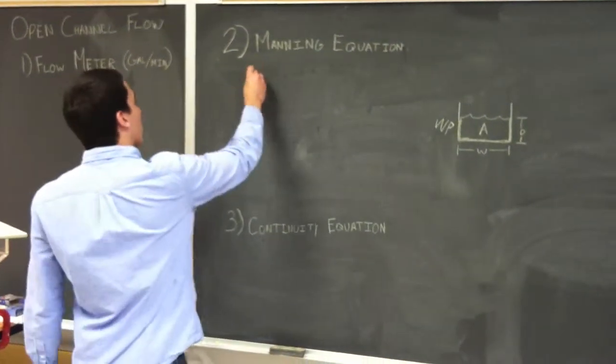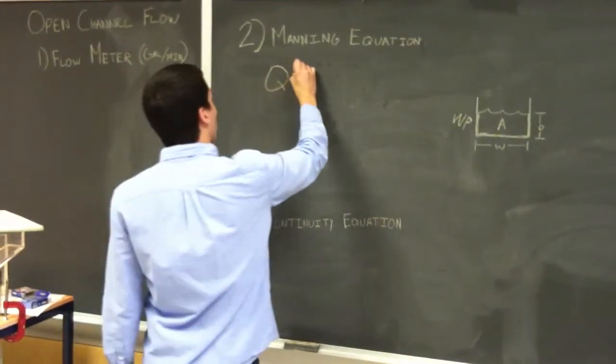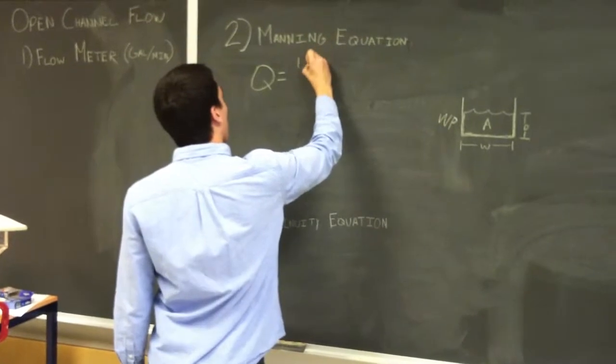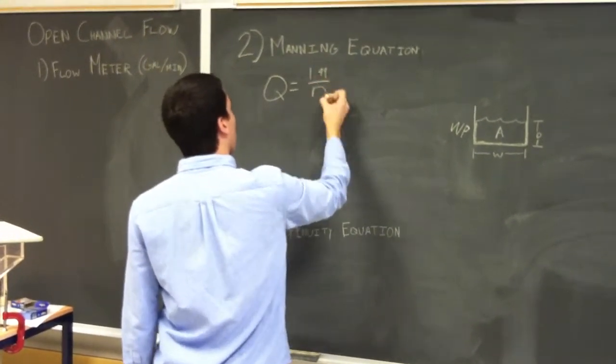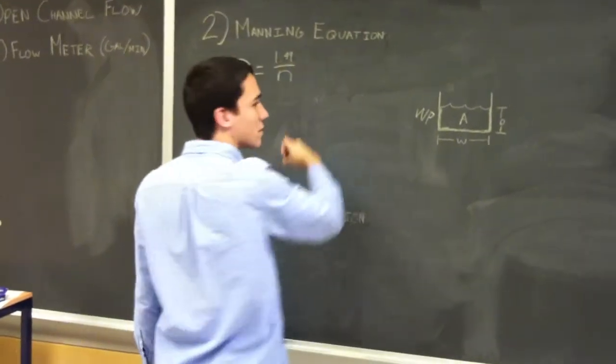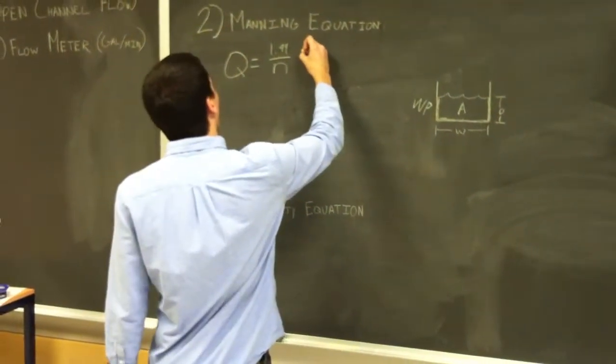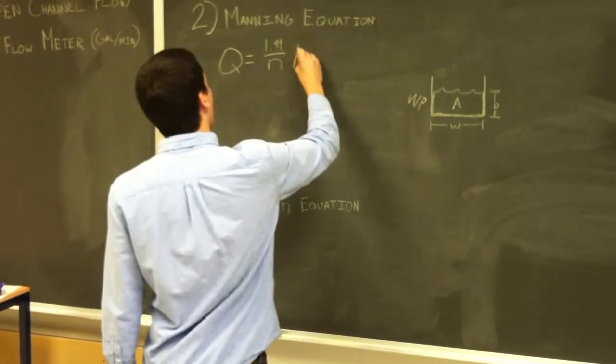So the Manning equation is flow is equal to 1.49 over the Manning roughness coefficient, which will be in the instructions, times the area,